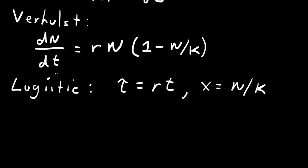If we do that, when we substitute t equals τ over r, we get an r here which cancels this r. We substitute N equals kx. We get a k here and a k here which cancel, and a kx. And the k's cancel here.